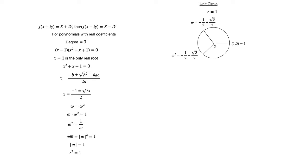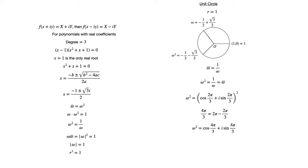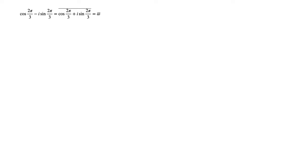With that preliminary out of the way, we have the statement that the conjugate of omega equals the reciprocal of omega. This quickly leads to the result that omega squared, which equals the reciprocal of omega, also equals the conjugate of omega. We can also see that omega² equals the conjugate of omega by the fact that 4π/3 = 2π − 2π/3, giving omega² = cosine(4π/3) + i·sine(4π/3), which simplifies to cosine(2π/3) − i·sine(2π/3). This is precisely the complex conjugate of omega.